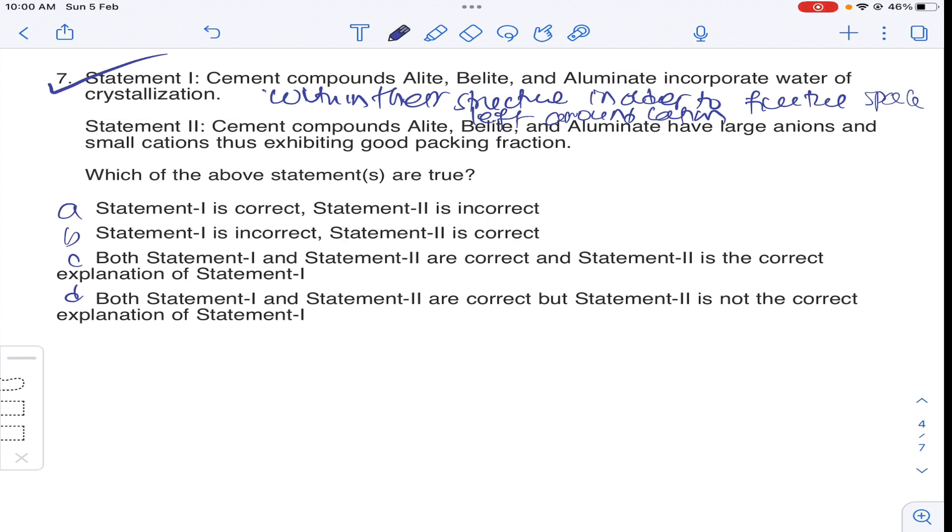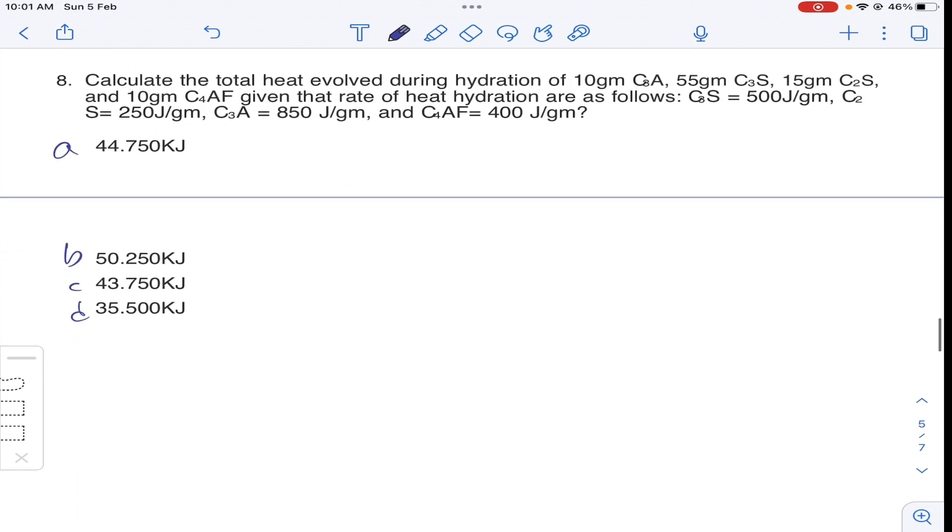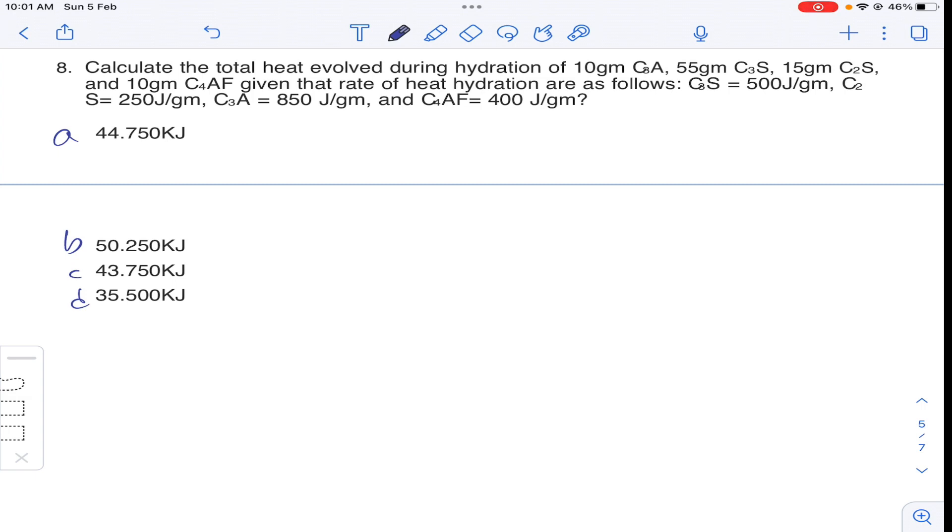Coming to second statement, cement compounds alite, belite, aluminate have larger anions. Obviously, alite, belite, aluminate have larger anions. This is a correct statement. So both statement 1 and 2 are correct and is explanation. So answer is C for question number 7. Coming to question number 8, it is a formula. You will get answer B.